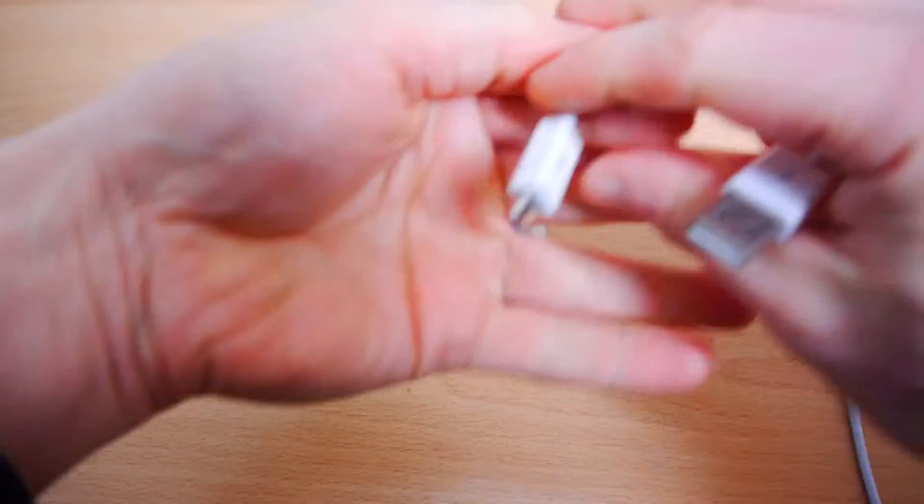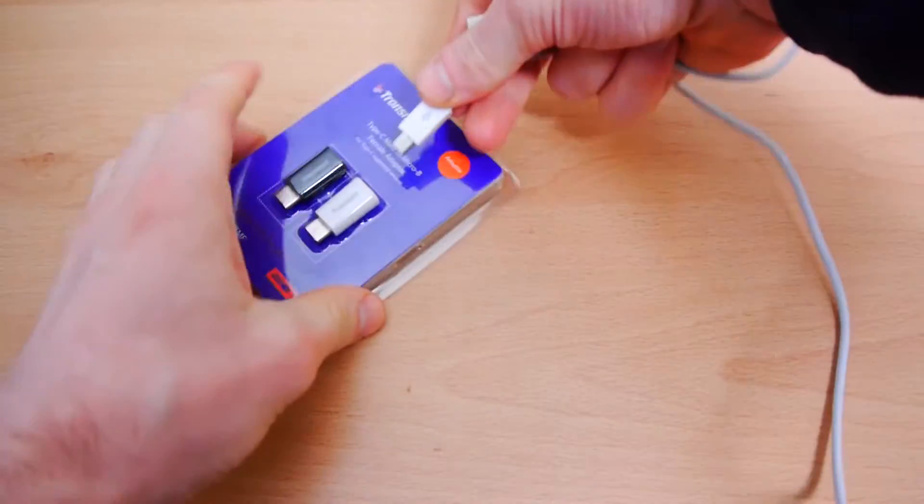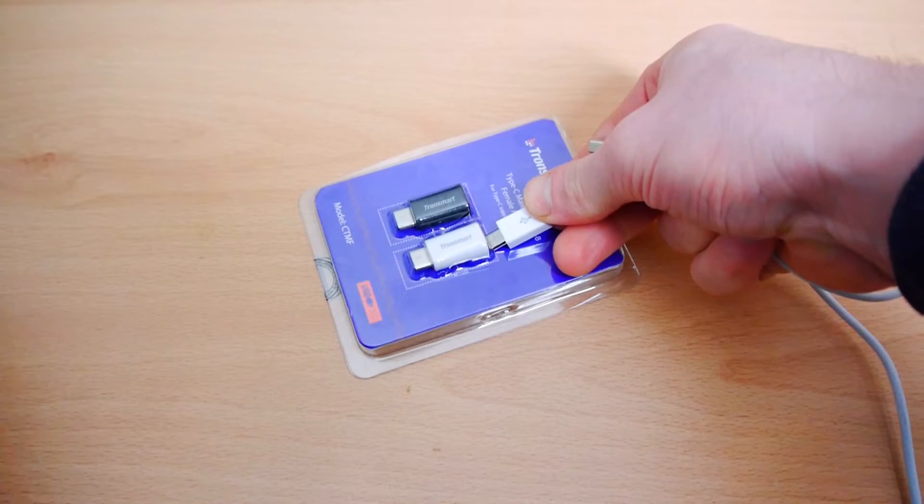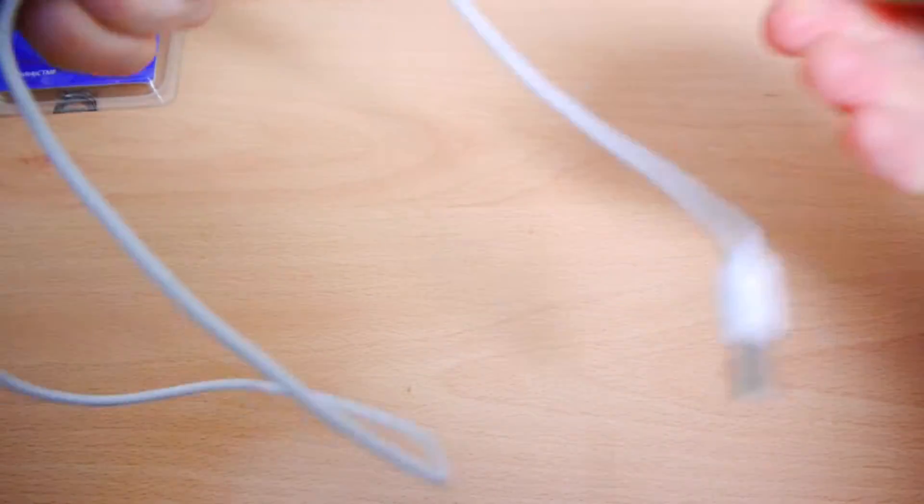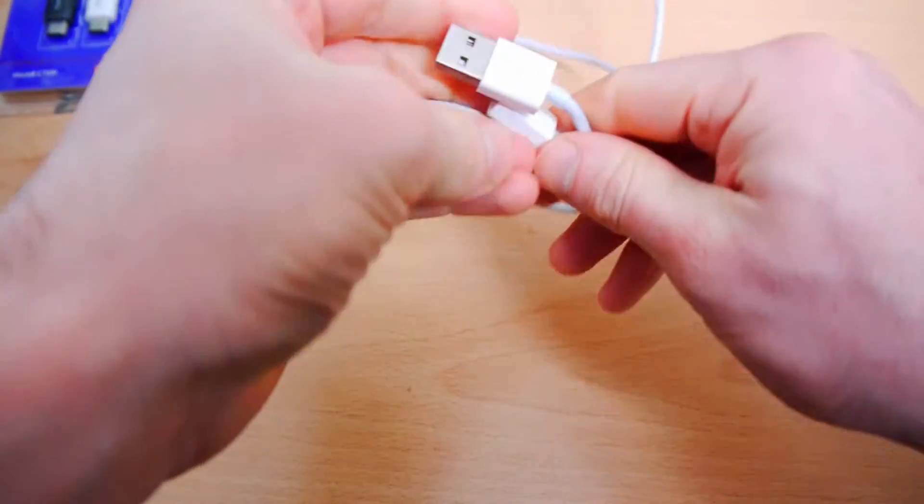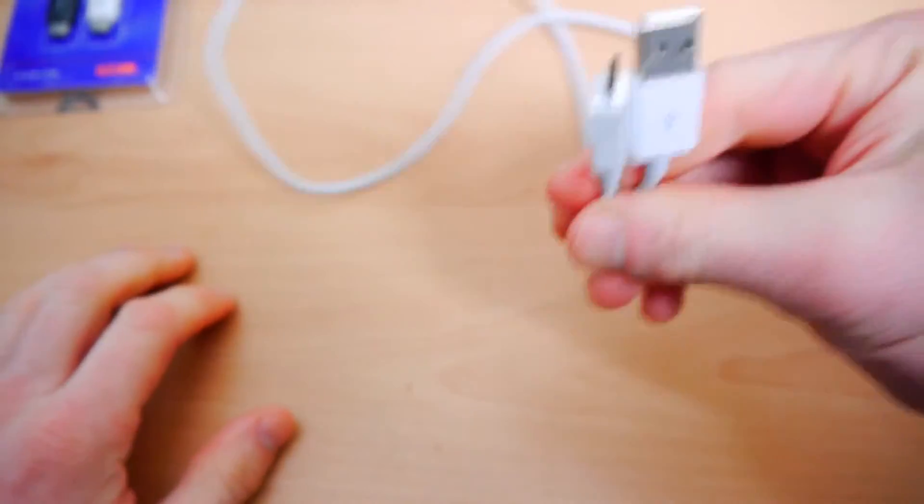So the idea is you'll plug in your Micro-B into here, and then that one will go into your device. That simple. This is something I wanted to pick up because I've got a lot of these older Micro-B cables around the house. I mean, everyone's got these.